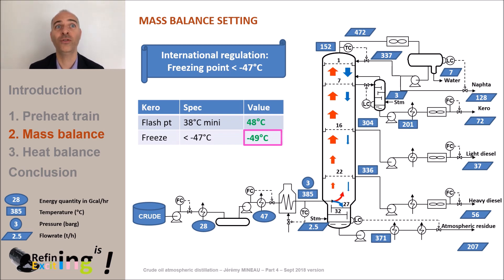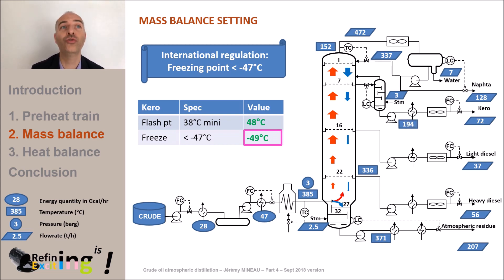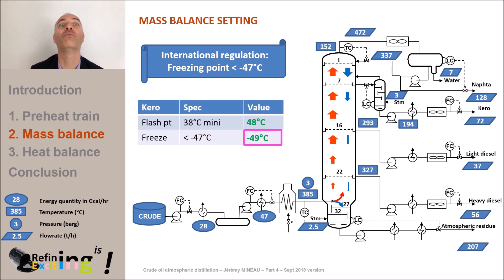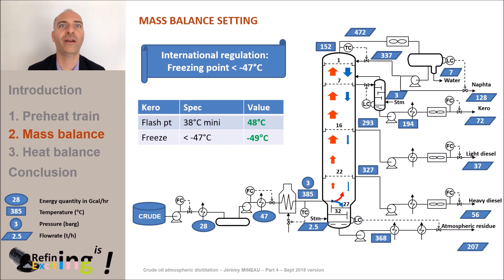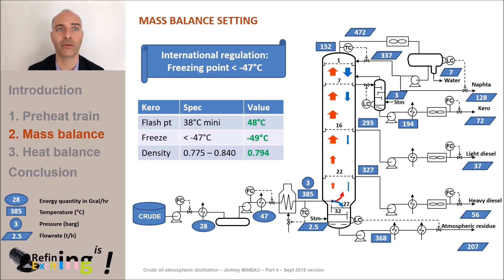As far as temperatures are concerned, we have a lighter kerosene cut, just like all the products withdrawn below kerosene. Thus, the withdrawal temperature of kerosene drops from 201 to 194°C, light diesel from 304 to 293°C, heavy diesel from 336 to 327°C, and residue from 371 to 368°C. It should also be noted that the international regulations require that the kerosene density be between 775 and 840 kg/m³, and this property is respected in our case, with an observed value of 794 kg/m³.